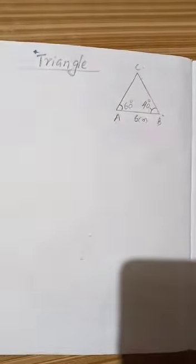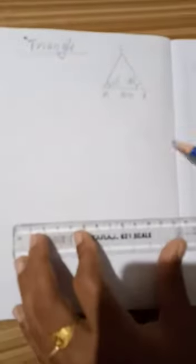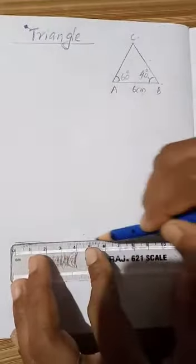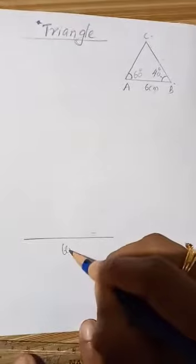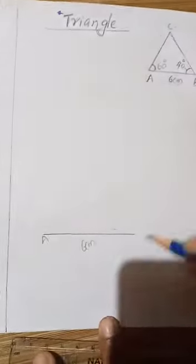I want to show how we can draw. AB is 6cm. How did the teacher draw AB 6cm? Point A, point B.